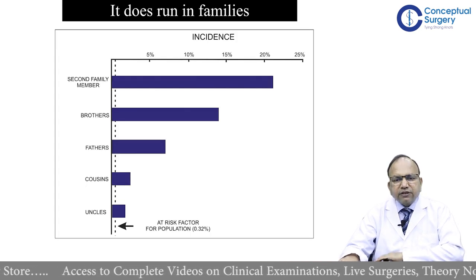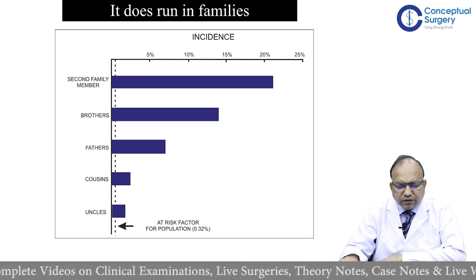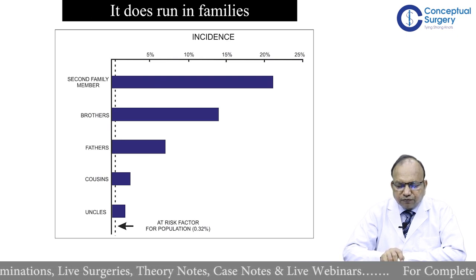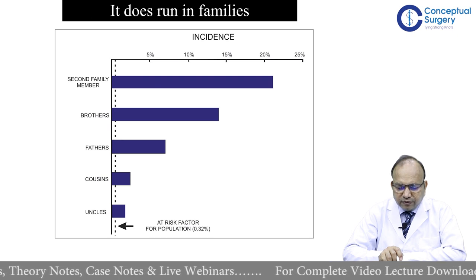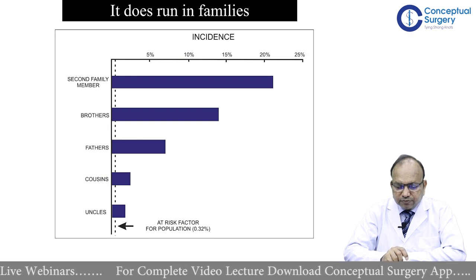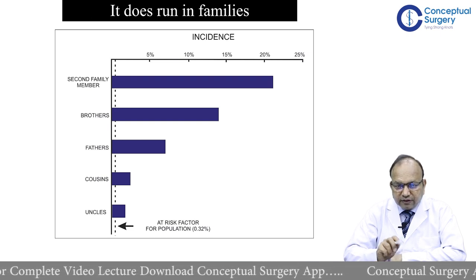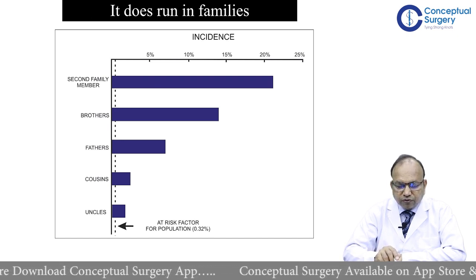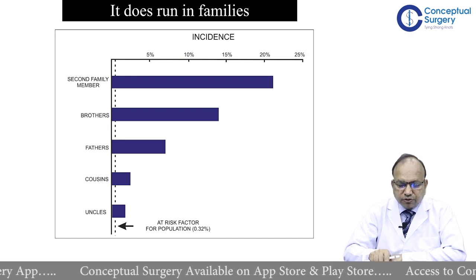Hypospadias does run in families due to the increased genetic pool. Brothers of an index child have approximately 15 percent higher incidence. The father-to-son transmission is less, but if one child has hypospadias, the next male child will also have it in about 15 percent of cases — so family history is important.